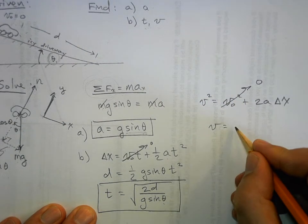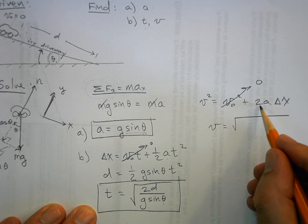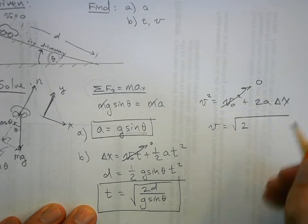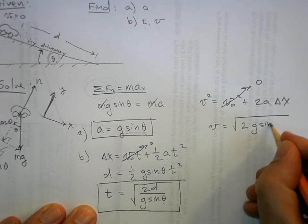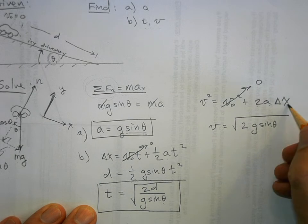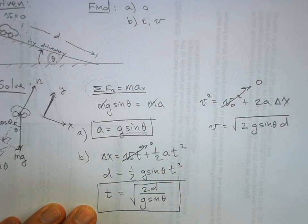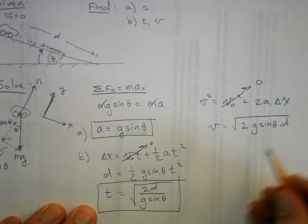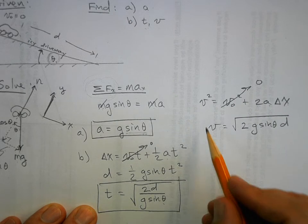There's my fourth kinematic equation. I know this is zero. v is equal to the square root of two times a, but a is g sine theta, and delta x we're calling d. And that's probably good enough. I can leave it like that.